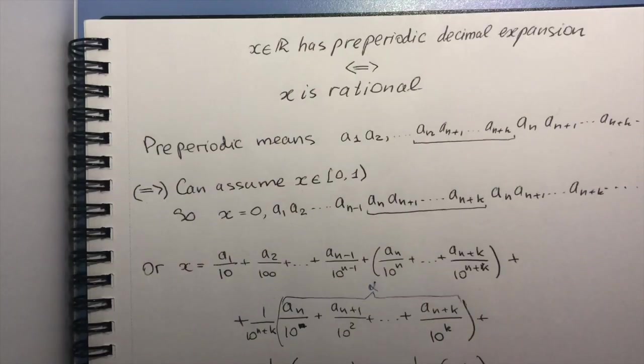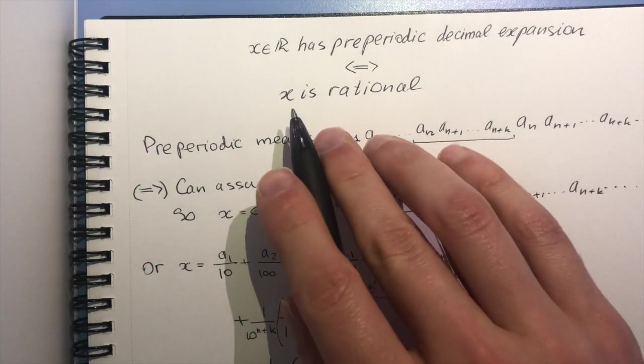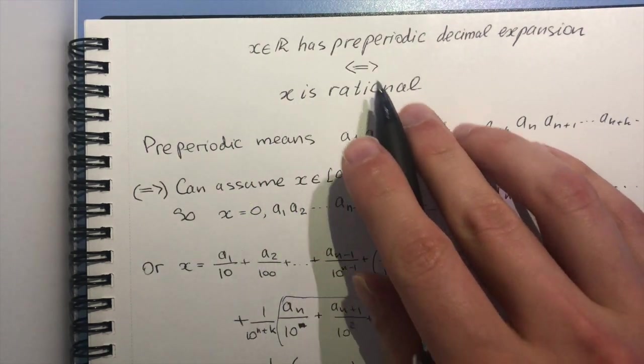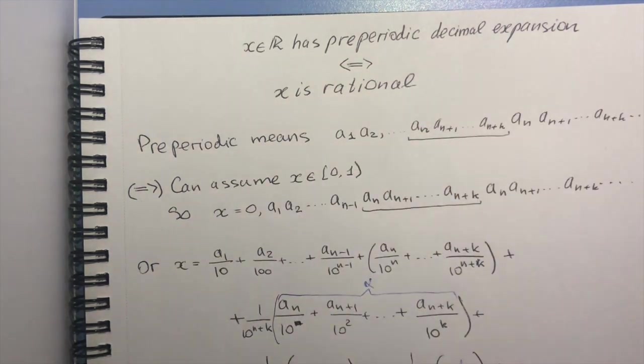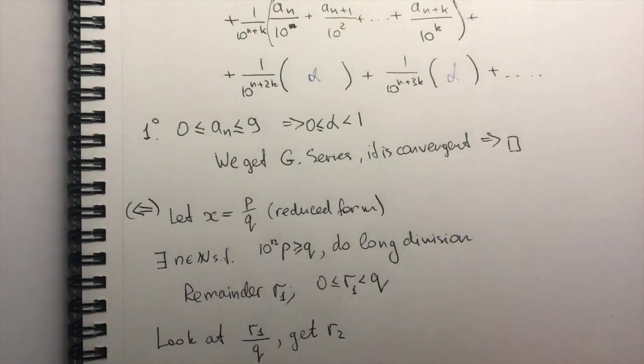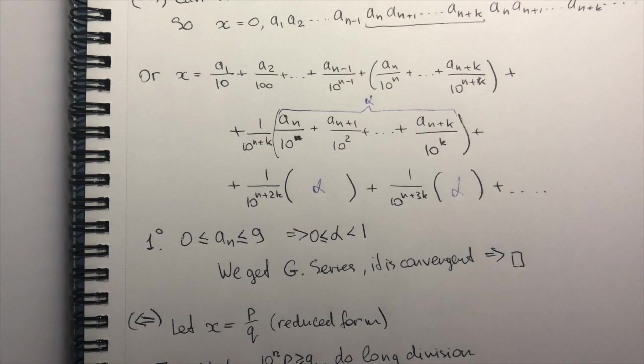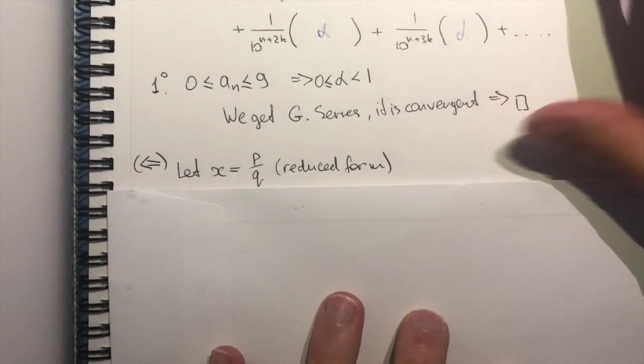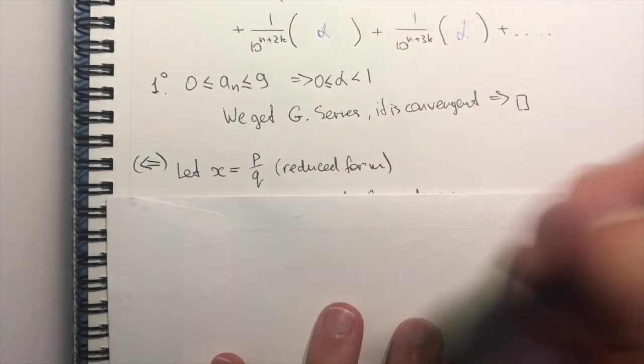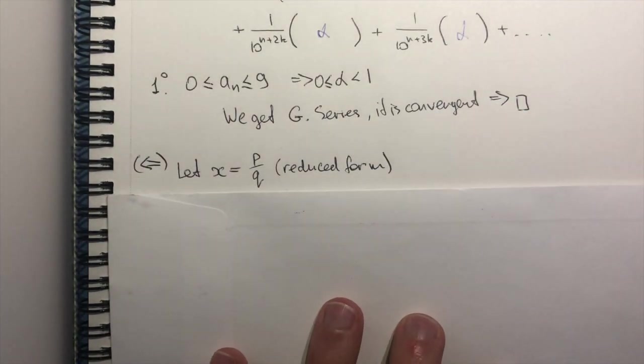So let's do the opposite direction. Let's assume that x is rational and show that at some point its decimal expansion will be preperiodic. So I suppose that x is equal to p over q, and it's in reduced form. So p and q are coprime.